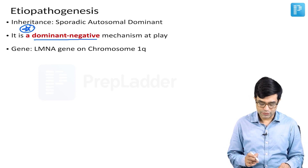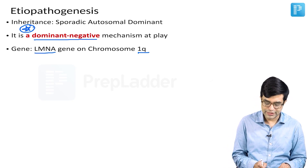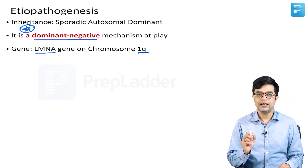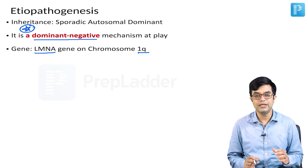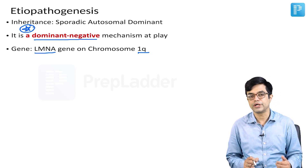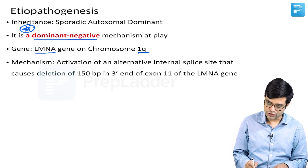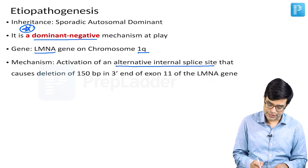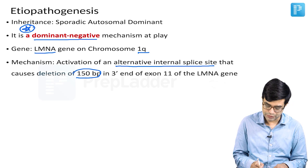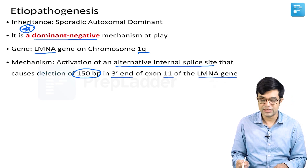The gene for this is present on chromosome 1Q and the gene name is LMNA. LMNA codes for nuclear lamin proteins — lamin A and lamin C. Among them, lamin A is more important in humans. The mechanism of this disorder is activation of an alternative internal splice site that causes deletion of 150 base pairs in the 3-prime end of exon 11 in the LMNA gene.